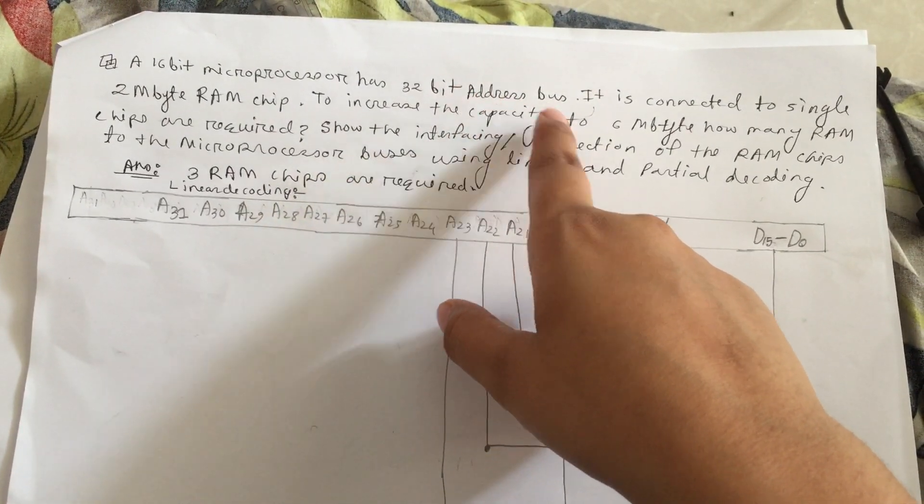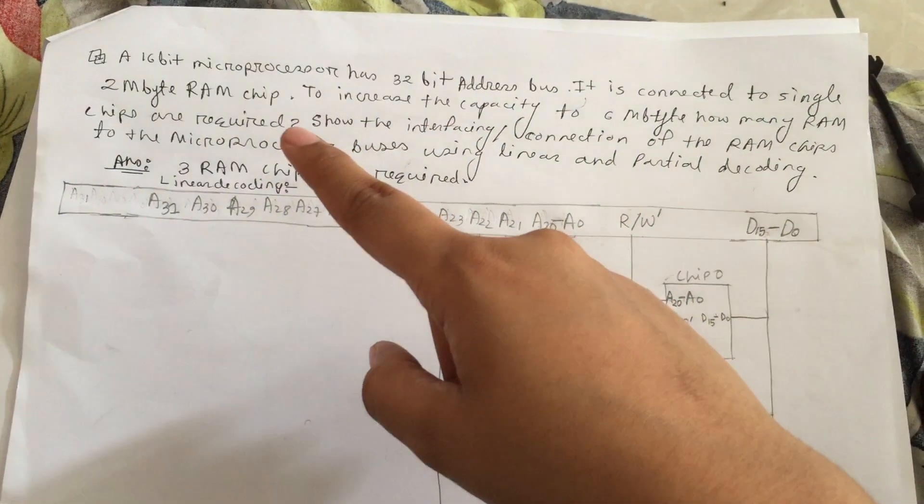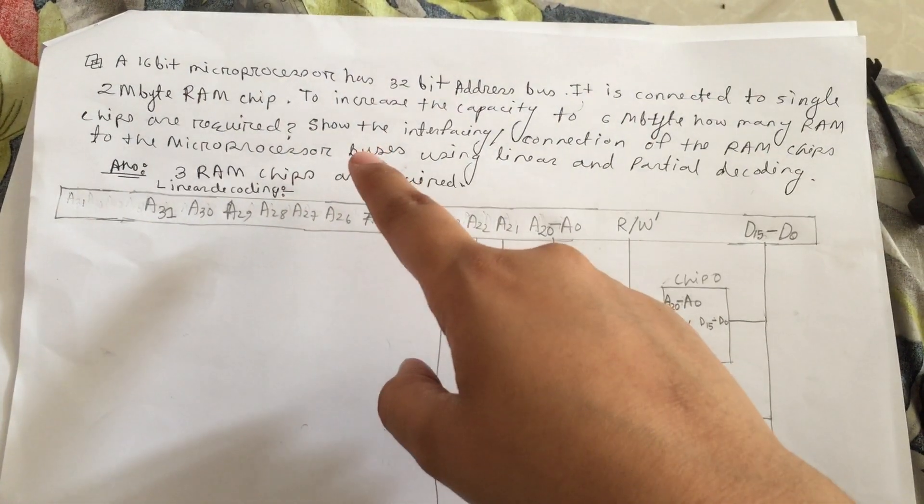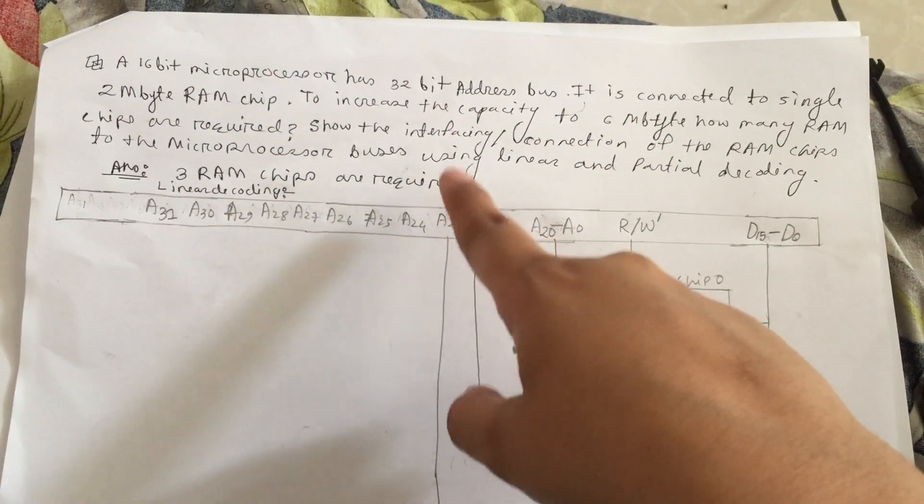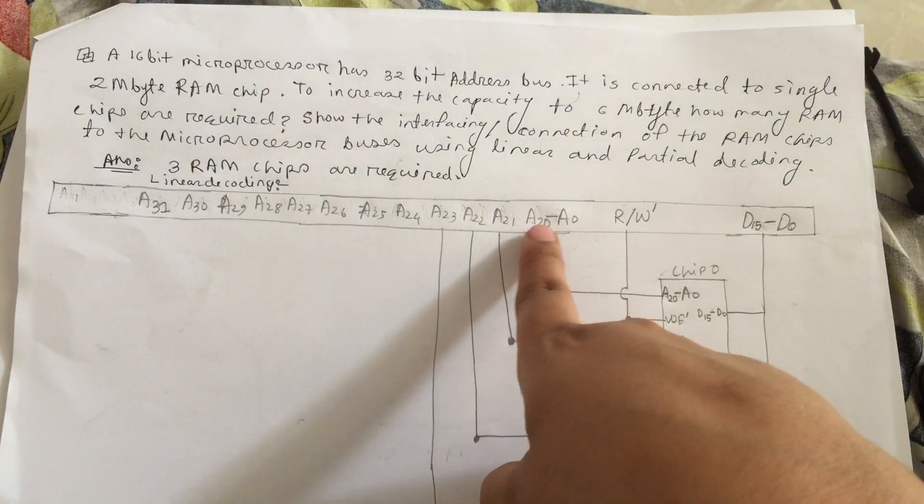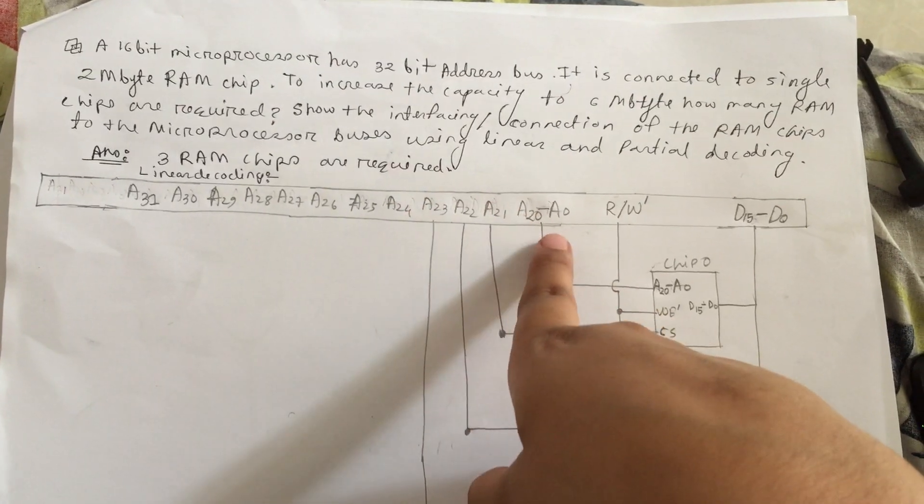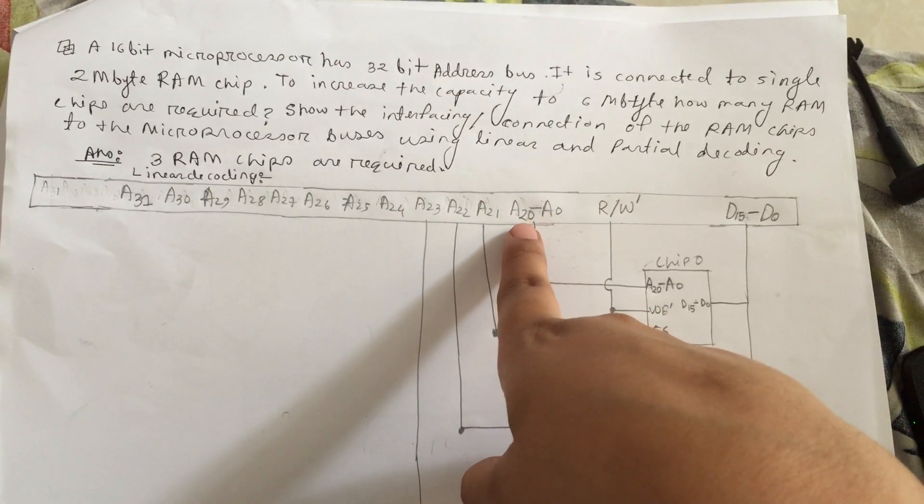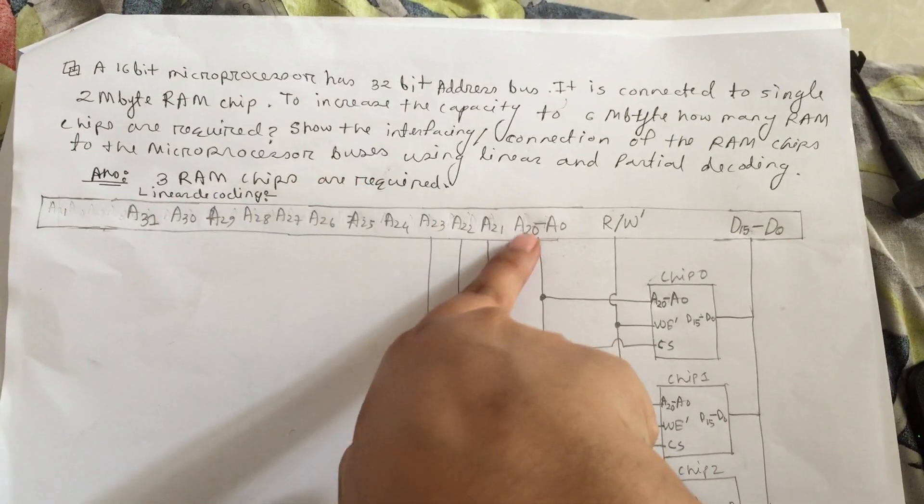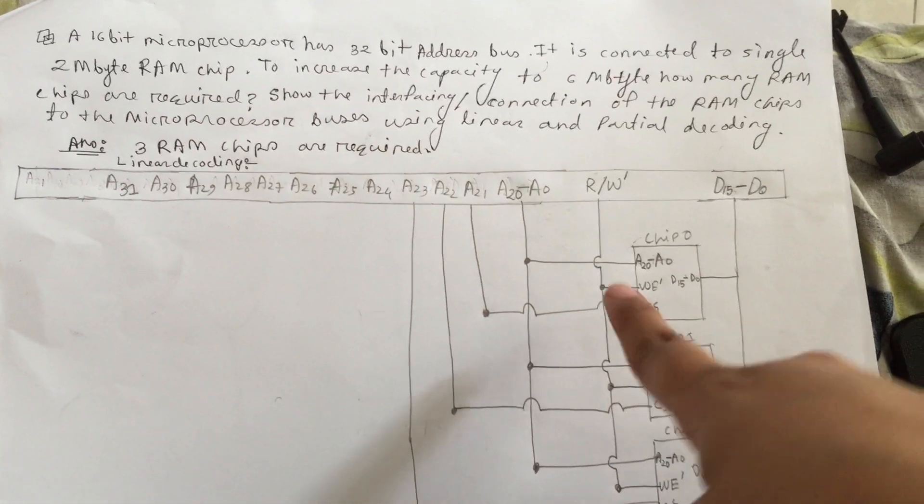This is in megabytes, so it's 2 to the 20. As it is 2 to the 20 for 1 megabyte, we have to take a0 to a19. As it is 2 megabytes, we have to take a0 to a20, and others are from a21 to a31.